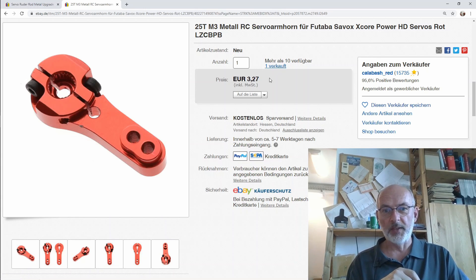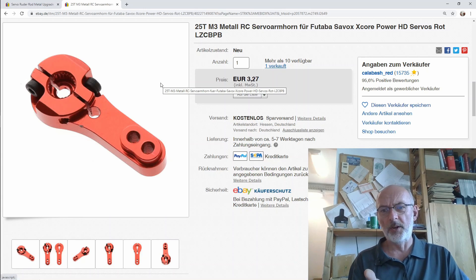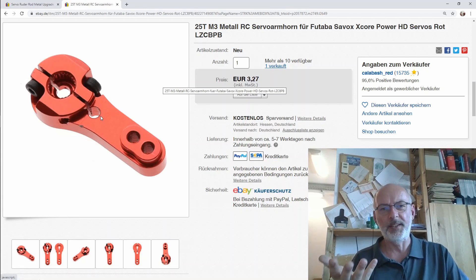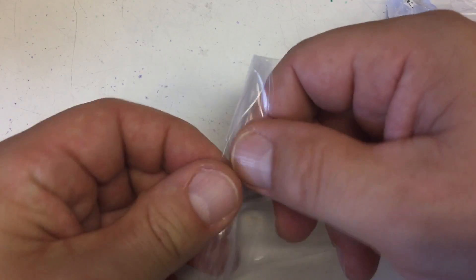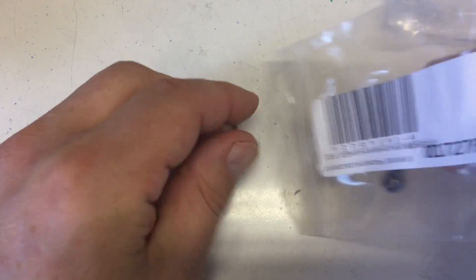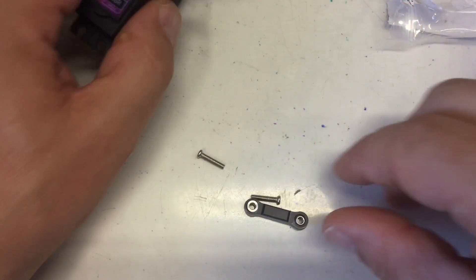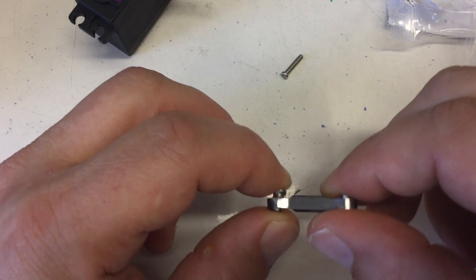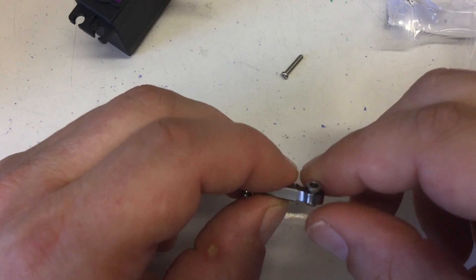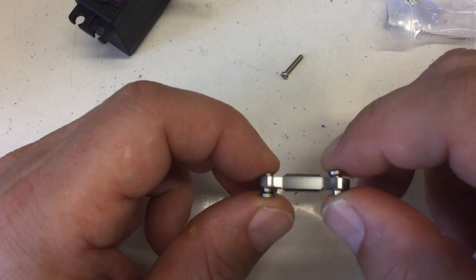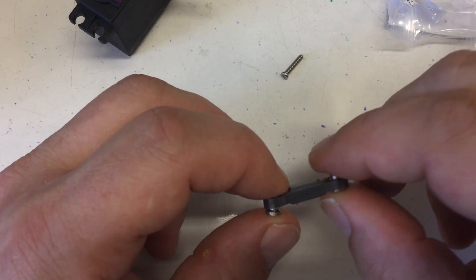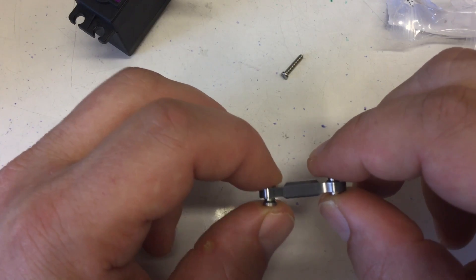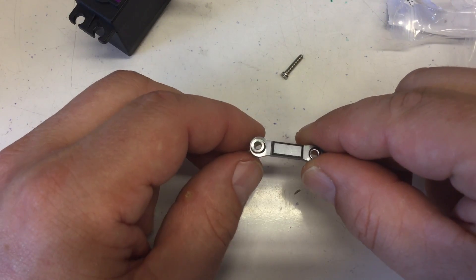Also from that Calabash red came that servo horn or servo arm. And 327 free shipping from within Germany. And again, you get these thingies from different sources. And the quality is okay. I mean, it is what it is.